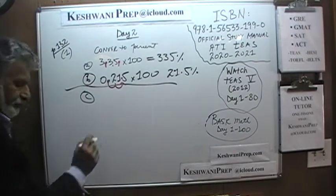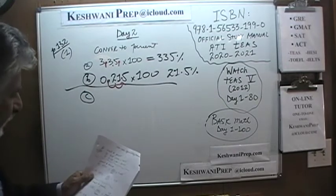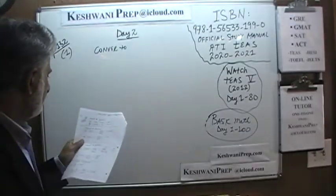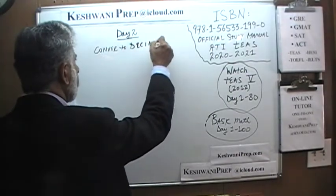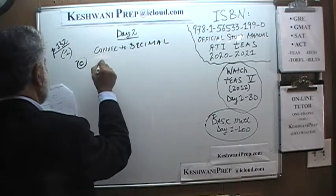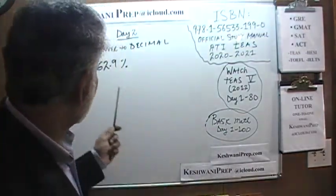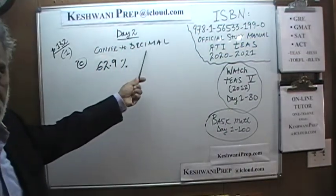Part C says: convert into decimal. This is different, so let's do it separately. Here we are going in reverse order. Before, we had numbers and were asked to convert them into percentage — so if you have a number, whether in decimal form or a whole number, you multiply by 100 to convert to percentage. Here we are given something in percentage and asked to convert it into decimal. So it is the reverse: instead of multiplying by 100, we are going to divide by 100.